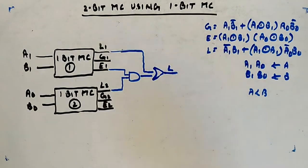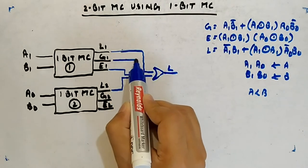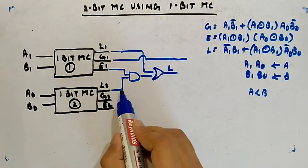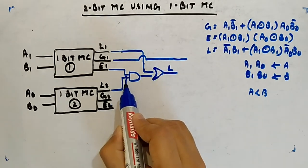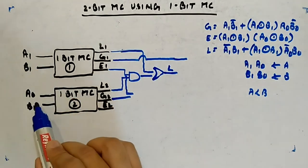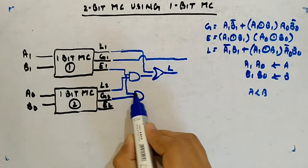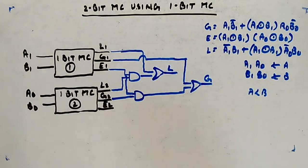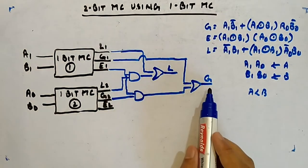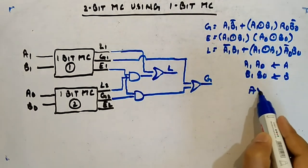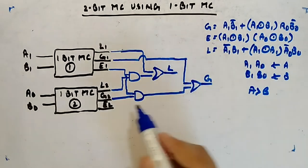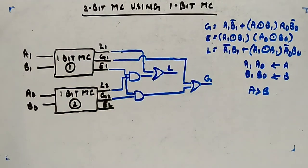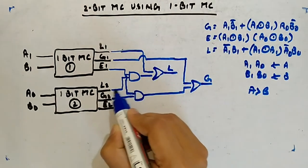Similarly for G: either you have A1 greater than B1, giving overall A greater than B directly, or you have A1 equal to B1 and A0 greater than B0. The AND gate combines E1 and G2, and that result along with G1 is fed into an OR gate to produce the overall G output.